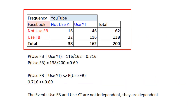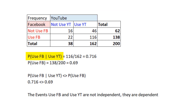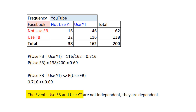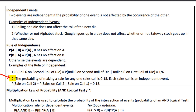For example, using the crosstab table from the last couple of videos: the probability of using Facebook given that the person uses YouTube equals 0.716. Comparing that to the marginal probability that someone uses Facebook, which equals 0.69, we see that the two probabilities are not equal. Therefore, the events 'use Facebook' and 'use YouTube' are dependent. As a second example with independent events: if the probability of making a sale on any particular sales call is 15%, and each sales call is assumed independent, that means whether or not you make a sale on the first call has nothing to do with whether you make a sale on the second call.